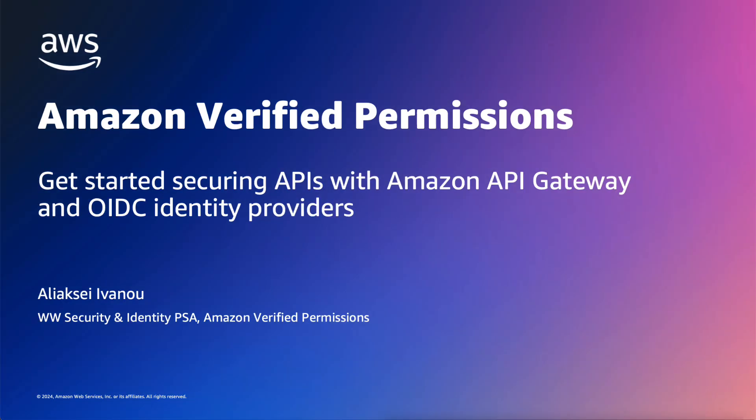Hi, I'm Alexey Ivano, Worldwide Security and Identity Partner Solutions Architect with Amazon Verified Permissions. Today I'll be demonstrating a new feature that makes it simple for you to use any OpenID Connect identity providers and Amazon Verified Permissions to authenticate and authorize user access to any APIs hosted on Amazon API Gateway.